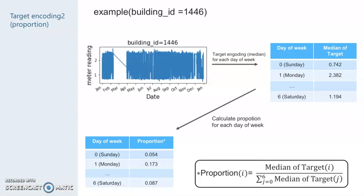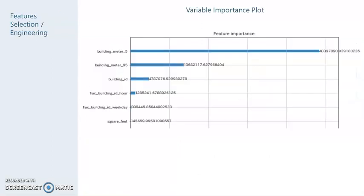We also apply this technique to hour, day, and so on. This is a variable importance plot of our model. Building meter 5 and building meter 95 are 5th and 95th percentile target encoding features. And frac building ID hour and frac building ID weekday are proportion target encoding features.